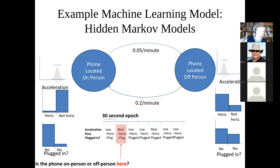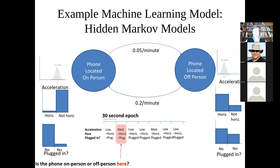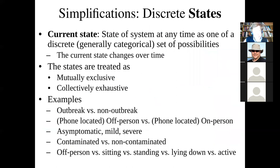Applications include foodborne illness outbreaks and smartphone-based data — for example, understanding screen time, or whether someone has the phone on-person or off-person, to know if data like step counts, physical activity levels, and contact patterns are representative of that person. We might classify whether the phone is physically on the person or sitting on a desk, using cues like whether it's horizontal, plugged in, or moving.